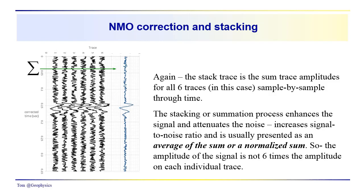We don't actually plot up the sum. We usually normalize it or take the average. Otherwise we'd have a signal which would be very large, and the noise would be much larger as well. So the sum is usually averaged or normalized, and we get a trace which looks similar in terms of relative amplitude to the individual traces in the gather.